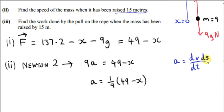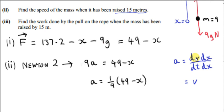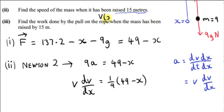We multiply above and below by dx. We get dx/dt, which is the rate of change of distance with respect to time — that's speed v. So a equals v·dv/dx. We use x instead of s, but it's the same idea. We can replace a with v·dv/dx. So we want v, the speed, as a function of x, and from that we can get the speed when x is 15. We solve this differential equation to find v as a function of distance x.